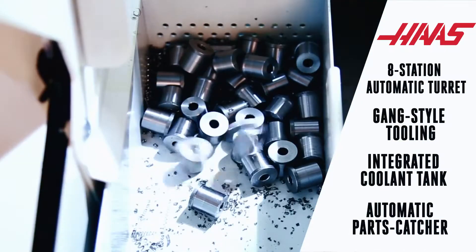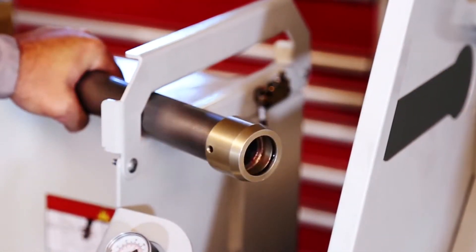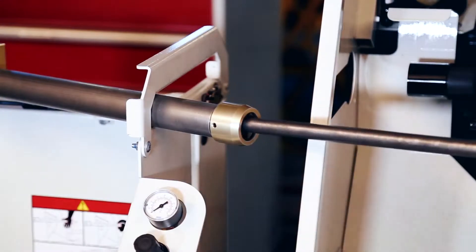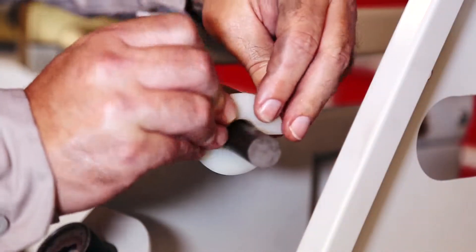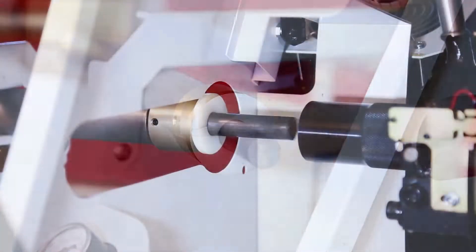But the most unique feature on this lathe, what might be different than any Haas lathe you may have run, is its optional pneumatic bar pusher. This is a push to stop system that runs off of air.